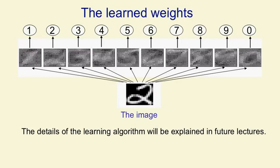I'll talk more in future lectures about the precise details of the learning algorithm but what you can see is the weights now look like little templates for the shapes. If you look at the weights going into the one unit, for example they look like a little template for identifying ones.